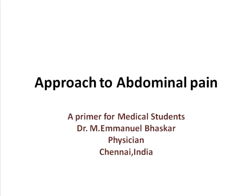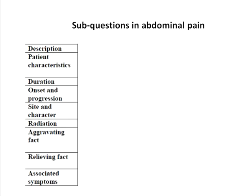In history-taking, as with any other symptom, you have a set of sub-questions for abdominal pain. The first is patient characteristics, which includes the age, the gender, and whether the patient has any prior history of similar abdominal pain — which could put the patient into specific conditions such as gallbladder pain, ureteric colic, or pancreatitis — and also certain risk factors which can make them more vulnerable to specific causes like pancreatitis and peptic ulcer.